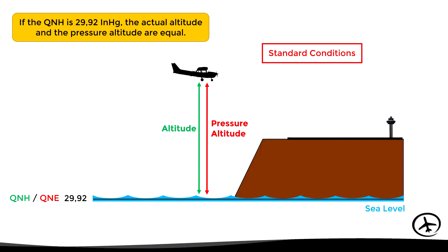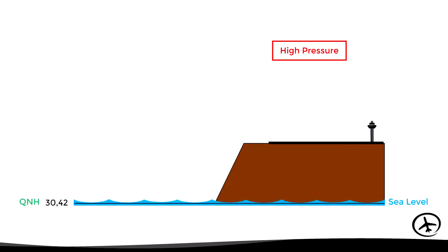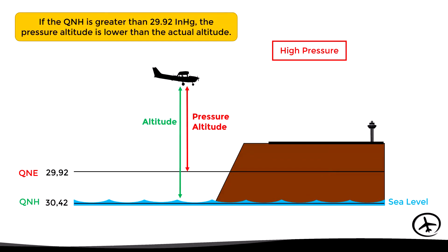This only happens if the conditions are standard. If we have a higher than standard pressure, the QNH will be higher than the QNE, which means that the 29.92 isobar would be above sea level. Therefore in this case the pressure altitude will be lower than the actual altitude.